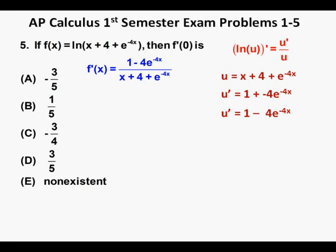Now, we can find f prime of 0 by substituting 0 for every x in the function. So we have f prime of 0 equals 1 minus 4e to the power of negative 4 times 0 over 0 plus 4 plus e to the negative 4 times 0.